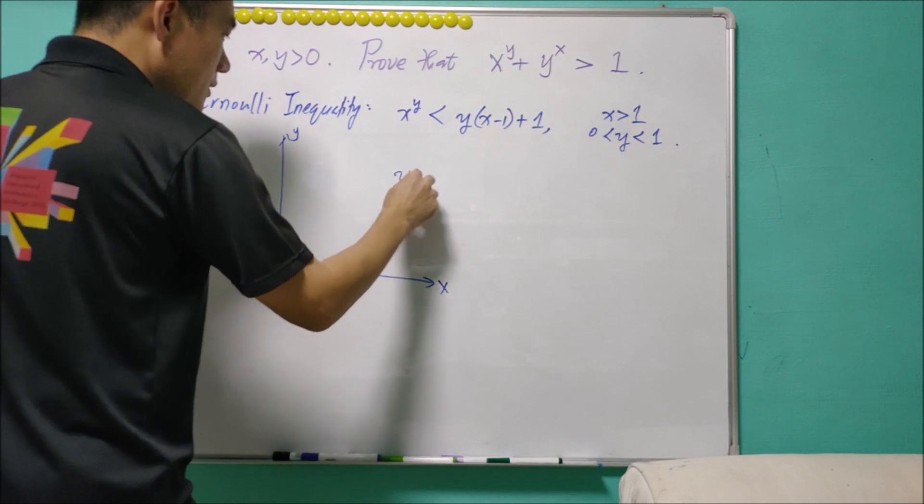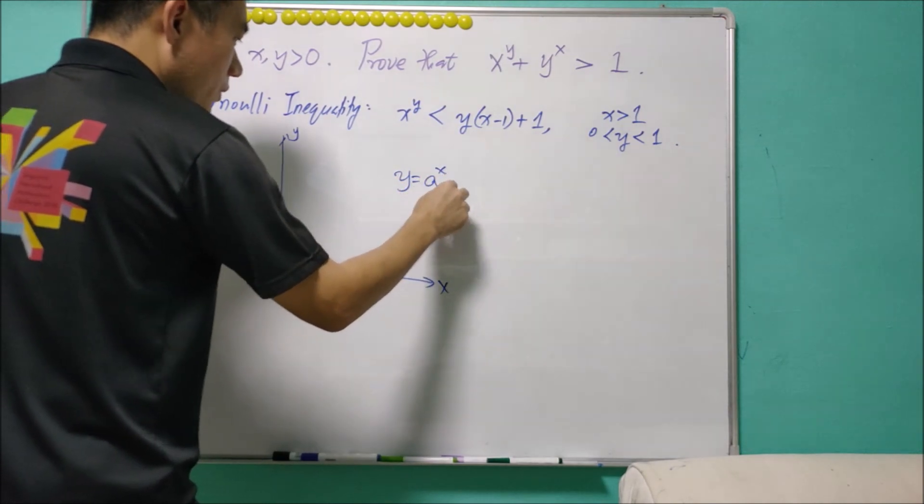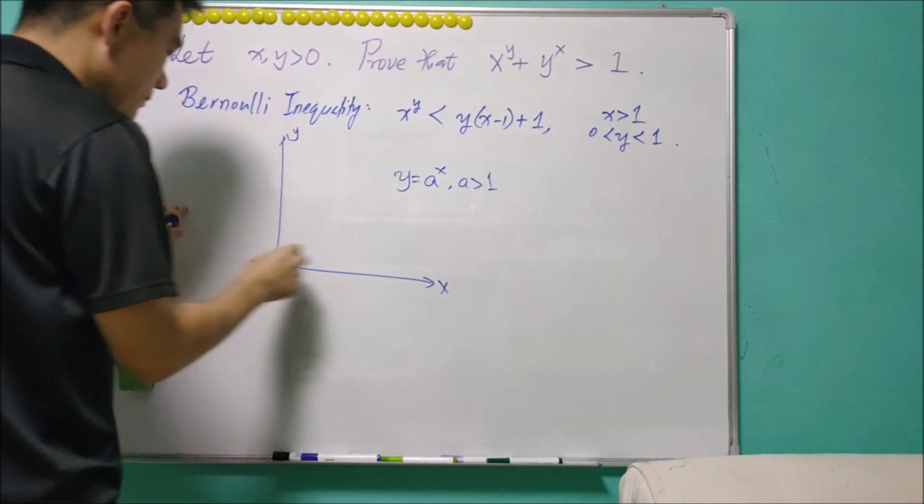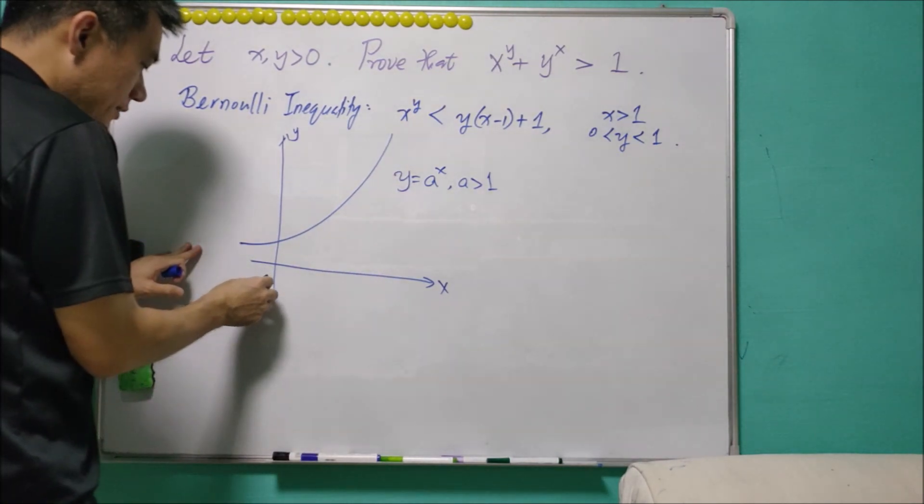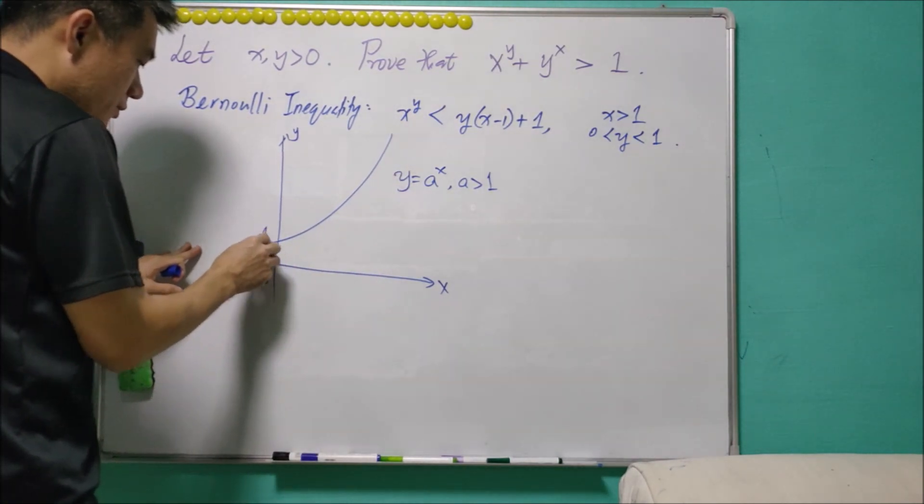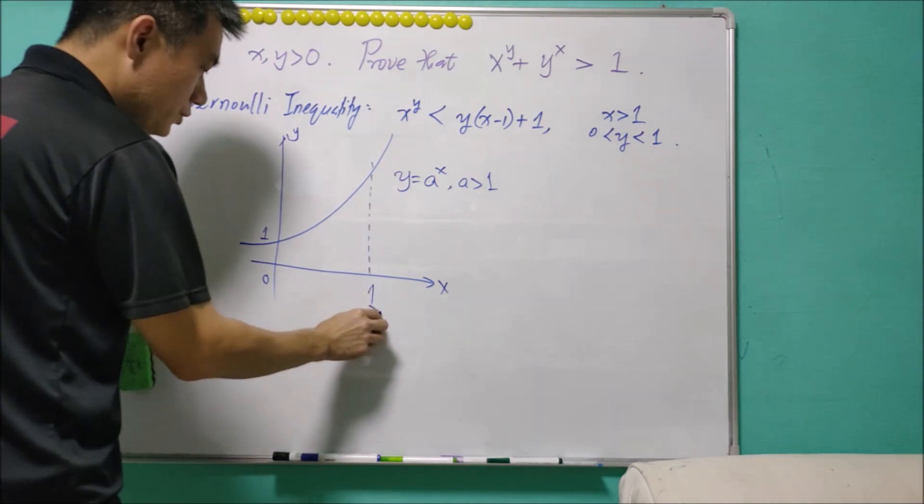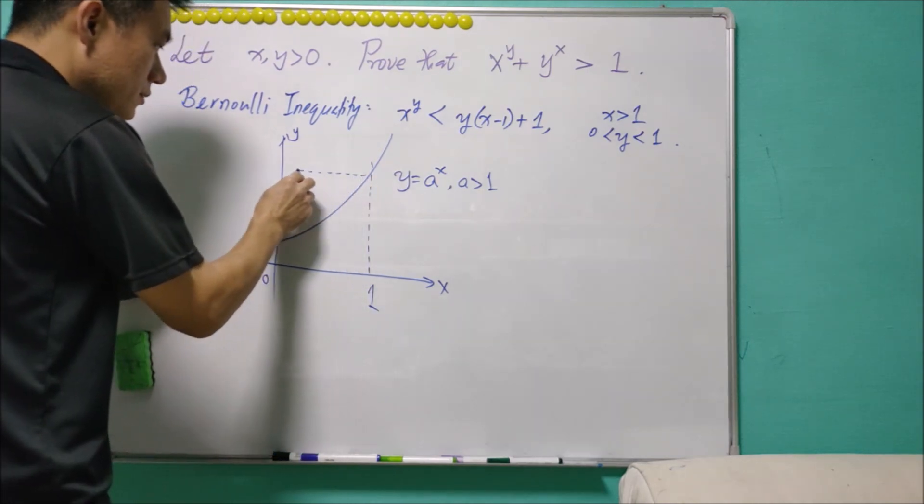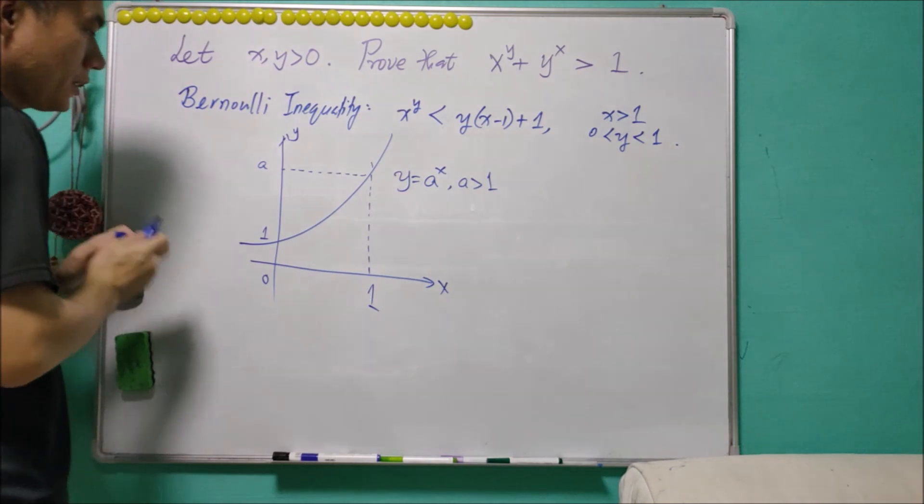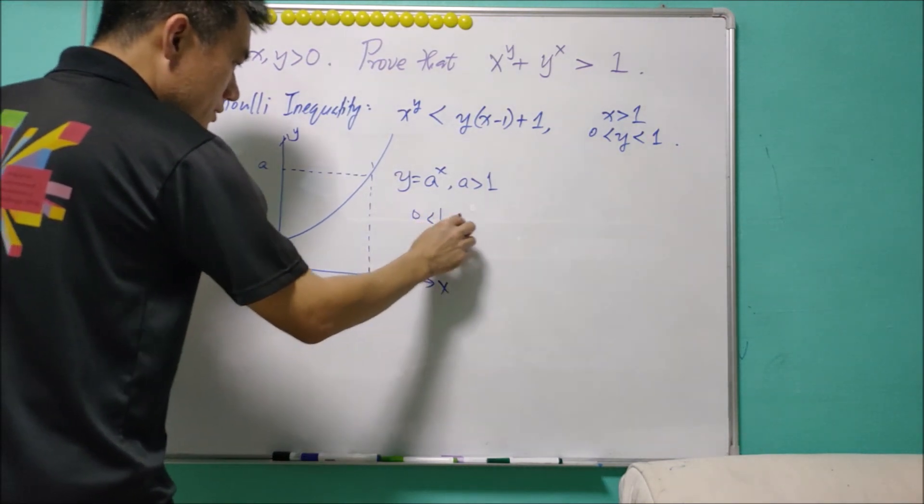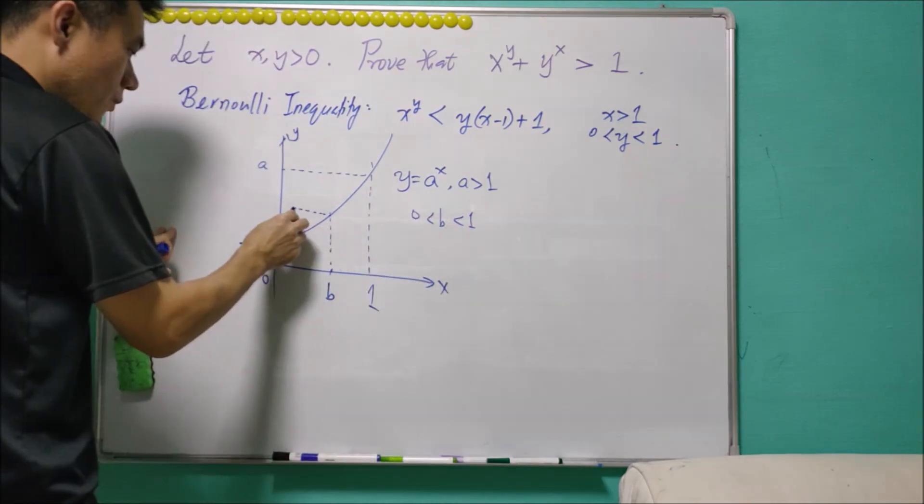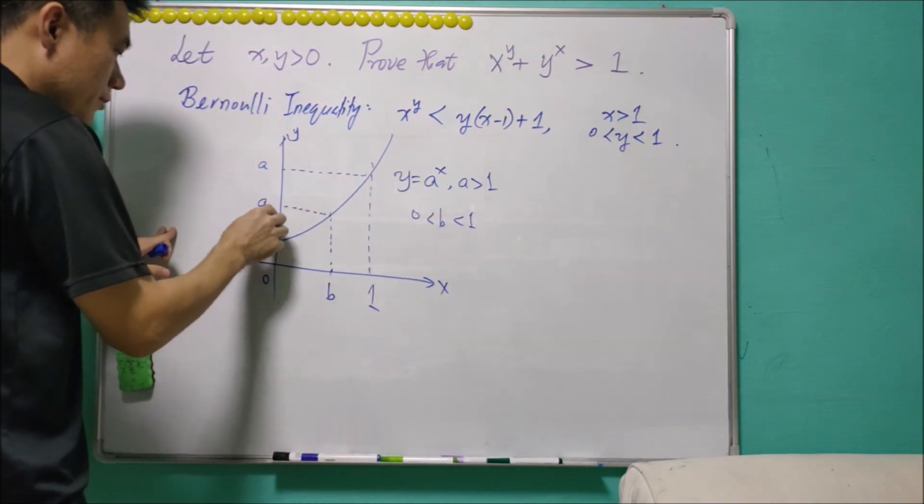I'll draw out y equals to a^x where a is greater than one and this will be the graph. And I know that when x equals to zero, y equals to one. When x equals to one, y equals to a, and if b is in between zero and one, then y will be equal to a to power b.